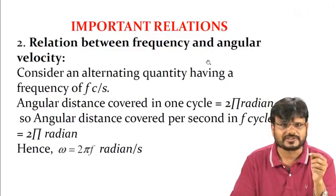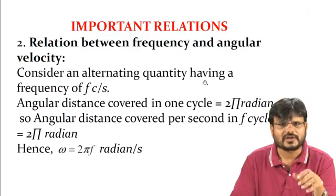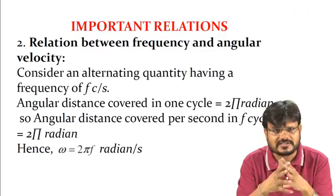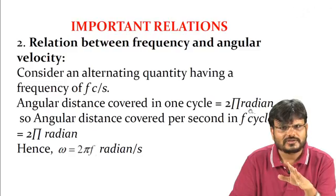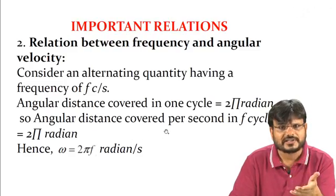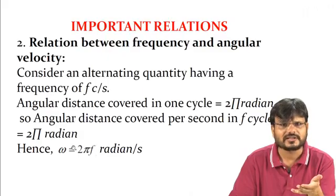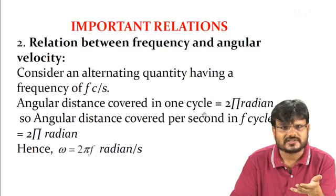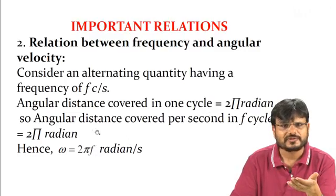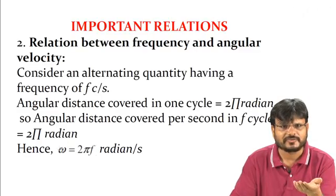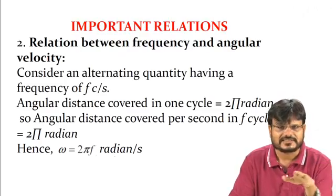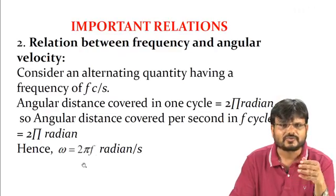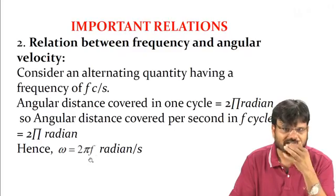The relation between frequency and angular velocity: angular distance covered in one cycle is 2π radians. Angular distance covered per second for f cycles equals 2πf. This angular velocity is denoted by omega: ω = 2πf radians per second. On the horizontal axis time is denoted as ωt, where ω = 2πf.